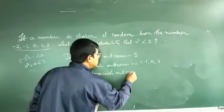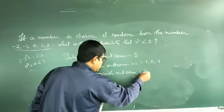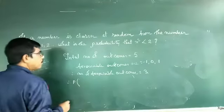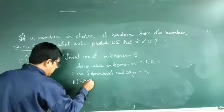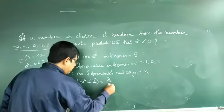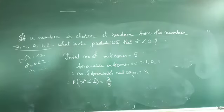And therefore, the probability of x squared less than 2 is 3 by 5. So write this one, very easy sum.